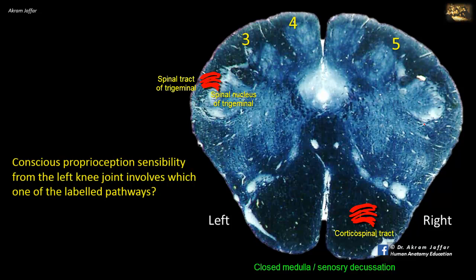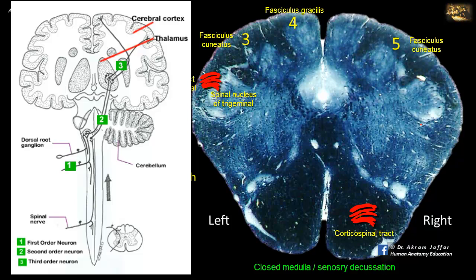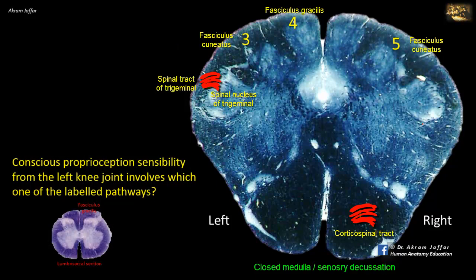Three and five represent fasciculus cuneatus — one on the left and one on the right. Four is the medially located fasciculus gracilis. Fasciculus gracilis and fasciculus cuneatus together constitute the dorsal column medial lemniscus system. This system conveys information about position sense as well as fine touch and pressure. At lower spinal levels, the fibers constitute the fasciculus gracilis and carry these sensory modalities from the lower limb, including the knee.